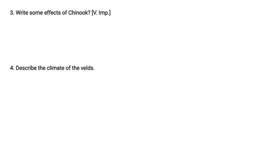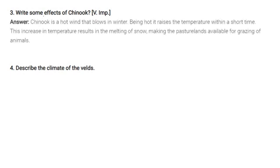Write some effects of Chinook. Chinook is a hot wind that blows in winter. Being hot, it raises the temperature within a very short time. This increase in temperature results in melting of snow, making pasture lands available for grazing of animals.